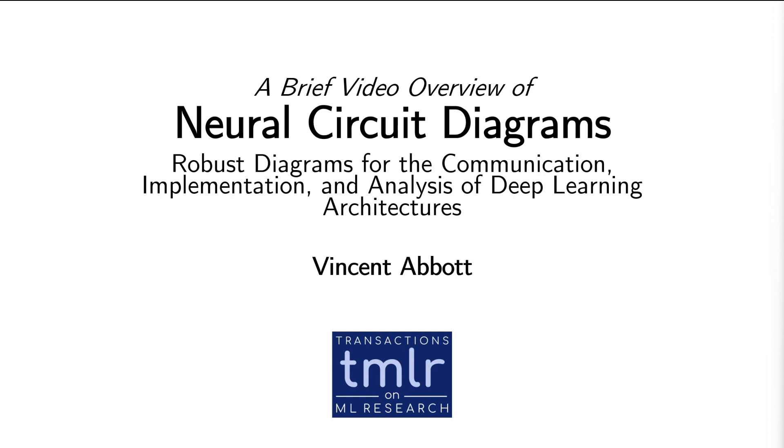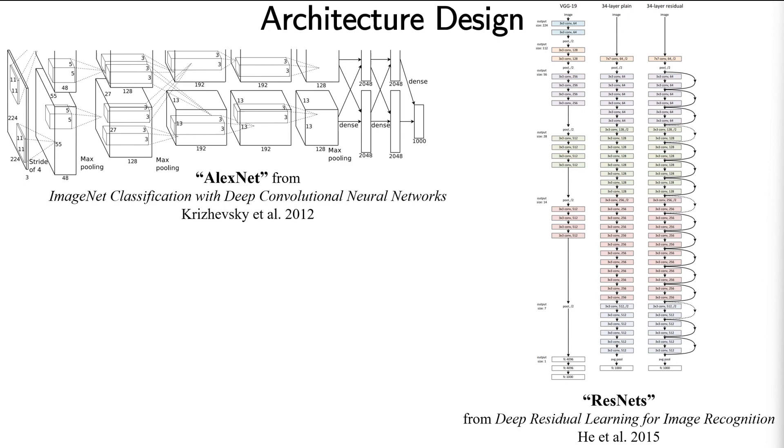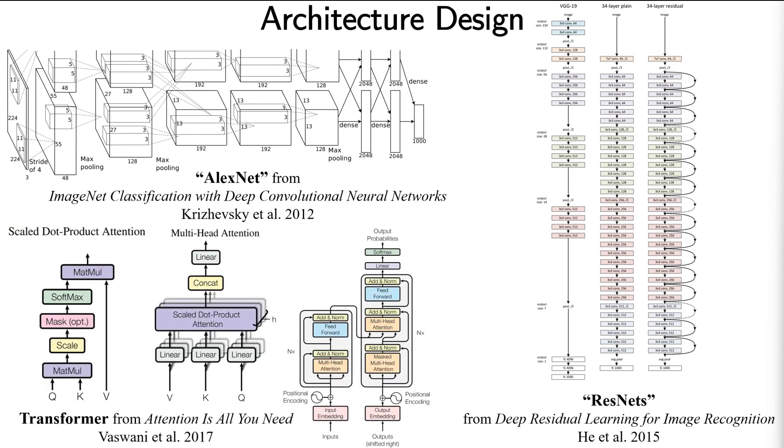Neural circuit diagrams address the lingering challenge of clearly communicating deep learning architectures. Architecture design has been central to the machine learning revolution over the last decade. Architecture design can significantly impact performance, ease of training, and the ability to tackle certain classes of data.